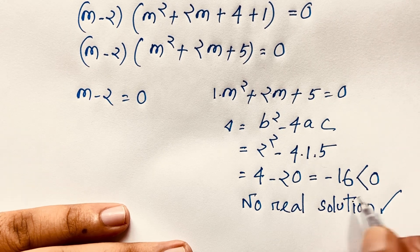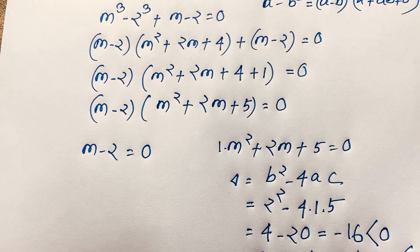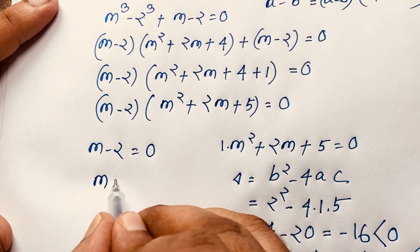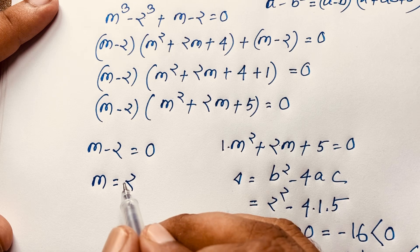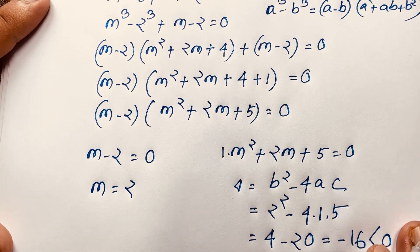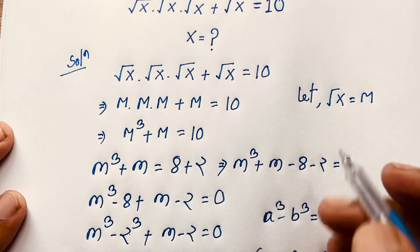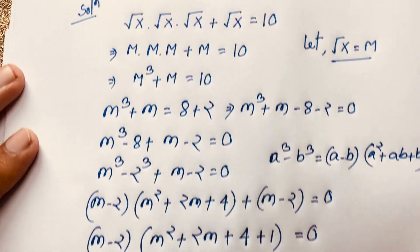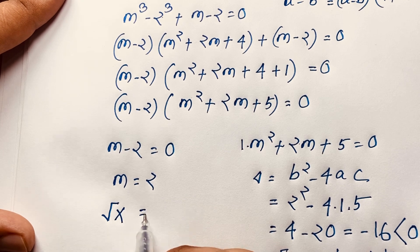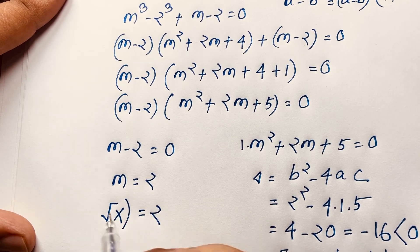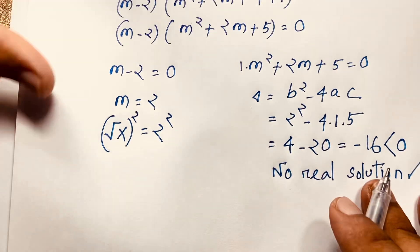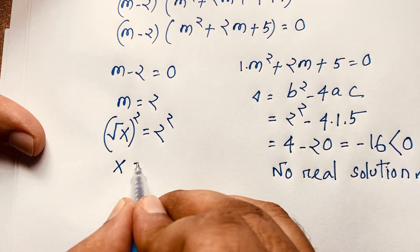We need the real solution. From the first case, m minus 2 equals 0, so m equals 2. Recalling that m equals square root x, we have square root x equals 2. Squaring both sides: x equals 4. This is our final answer.